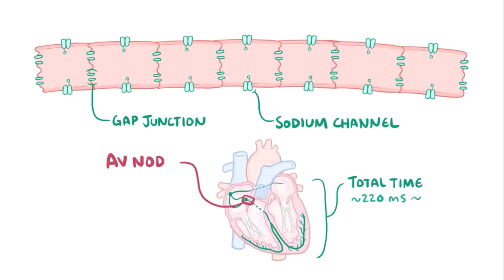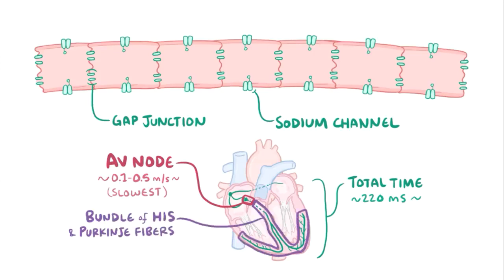Through the AV node, it goes just 0.01 to 0.05 meters per second, making it the slowest bit in the heart, which gives the atria time to contract. But through the bundle of His and Purkinje fibers, it moves at about 2 to 4 meters per second, making it the fastest stretch and allowing the ventricles to beat in a coordinated way.